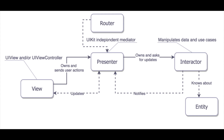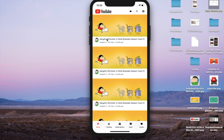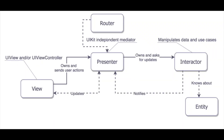So VIPER basically has five modules: View, Presenter, Router, Interactor, and Entity. For example, in our application we have Home — and in Home, there are five modules: View, Interactor, Presenter, Entity, and Router.